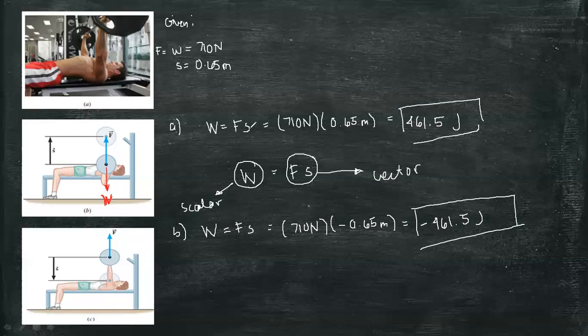When force and displacement are directed at the same direction, we're going to have a positive work. But if the force and displacement are in opposite directions, we're going to have a negative work. And when we exert a force and the displacement remains at zero, then we're going to have a zero work, a zero value of work.